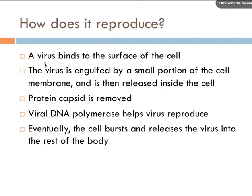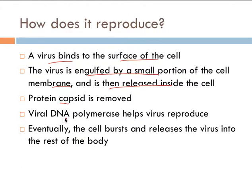To better come up with a strategy to treat a viral infection, you have to determine how a virus reproduces. There are some steps to know: the virus binds to the surface of the cell, is engulfed by a small portion of the cell membrane, and is released inside the cell where the protein capsid is removed. The viral DNA polymerase helps the virus reproduce, and then the cell bursts and releases the virus into the rest of the body for the cycle to continue.